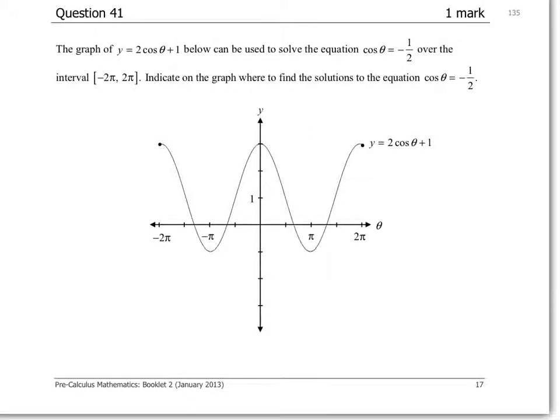Question 41. The graph of y equals 2 cos theta plus 1 below can be used to solve the equation cos theta equals negative 1 half over the interval negative 2 pi to 2 pi. Indicate where to find the solutions to the equation cos theta equals negative 1 half.